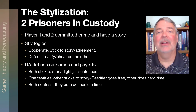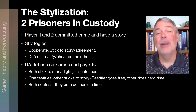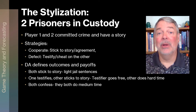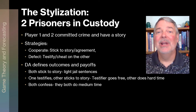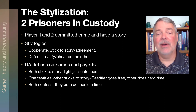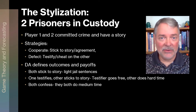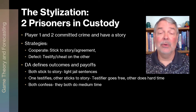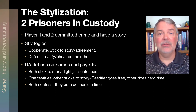Let's review the stylization of the prisoner's dilemma. We've got two prisoners who committed a crime. They have two choices: cooperate — stick to the story — where they can explain away whatever happened and get a lighter sentence. But if they cheat, they can testify against the other one. The DA defines these outcomes. If both stick to their story, they only get light sentences. If one testifies while the other sticks to the story, the testifier goes free and the other does hard time. If both confess, they both do medium time.